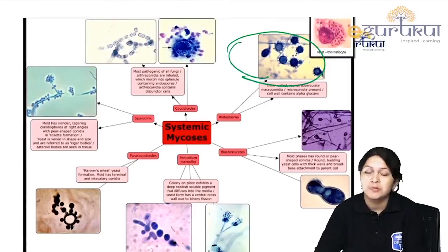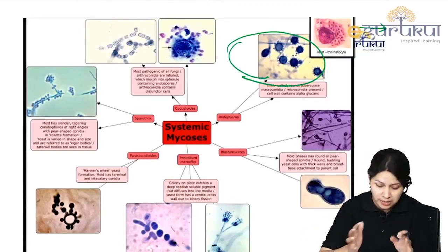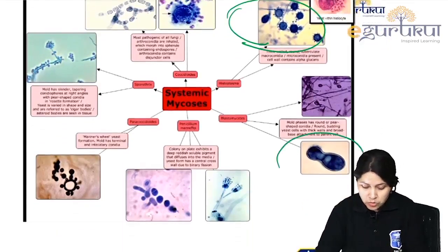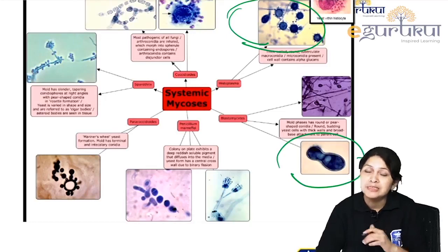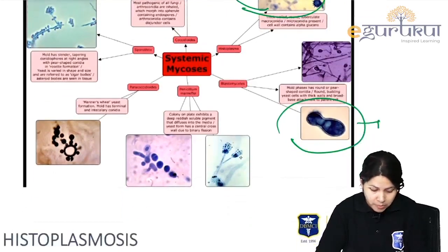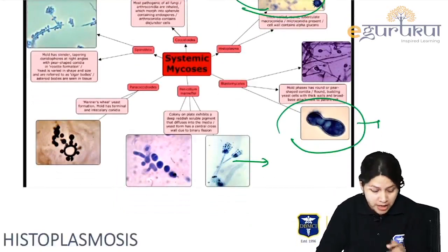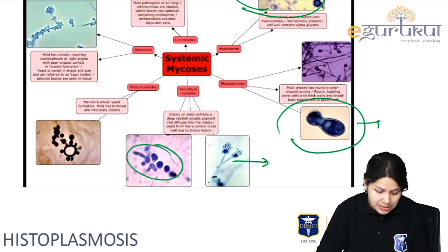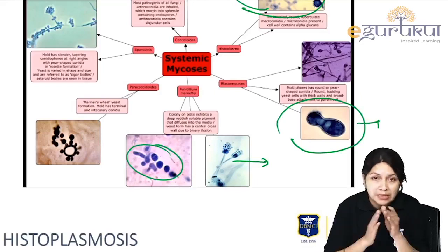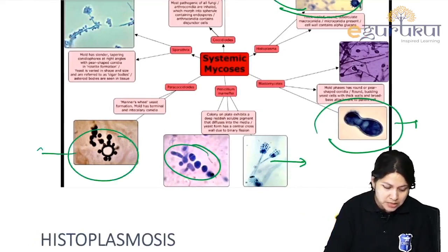This is Histoplasma capsulatum — classically seen as intracellular yeast. This is Blastomyces showing classical broad-based budding yeast cells. This is the brush-like structure classically seen in Penicillium marneffei, where the transverse septum is seen in the yeast cells. This is the classical mariner's wheel appearance of Paracoccidioides.